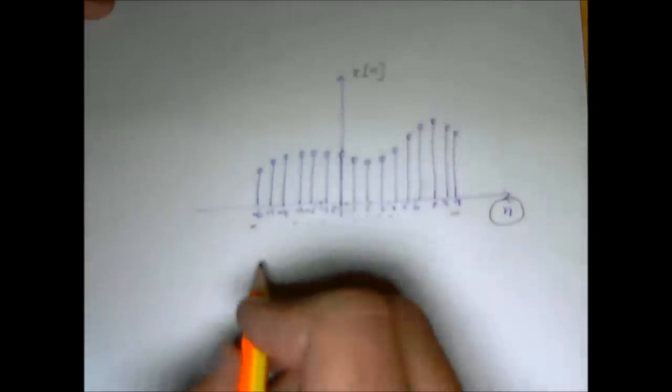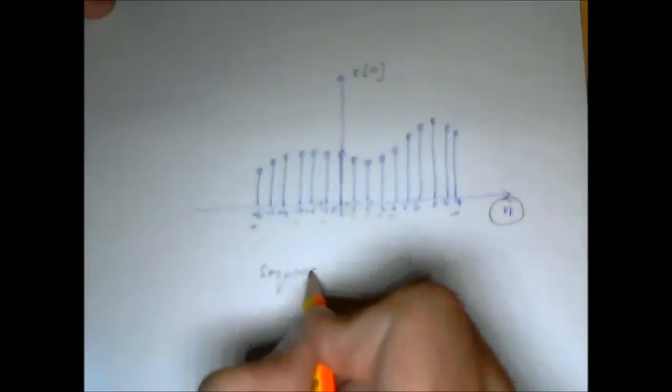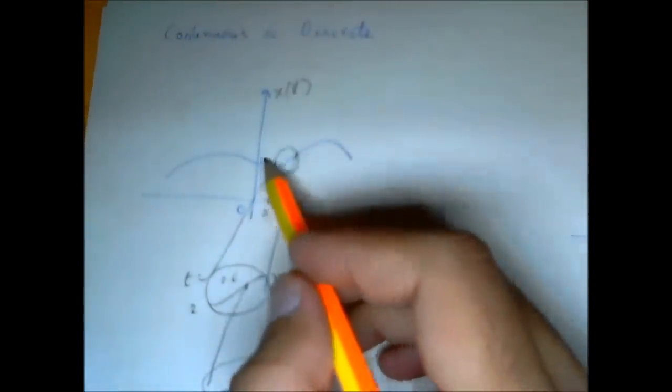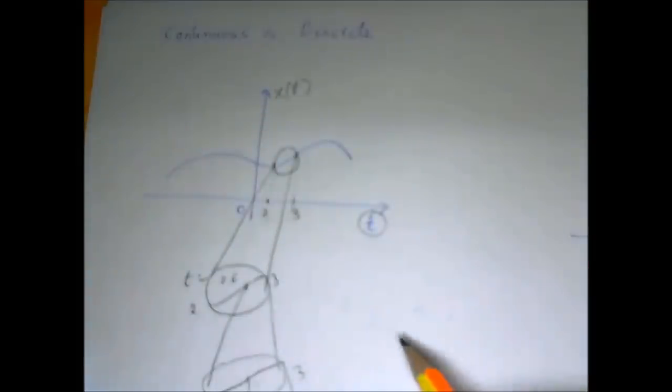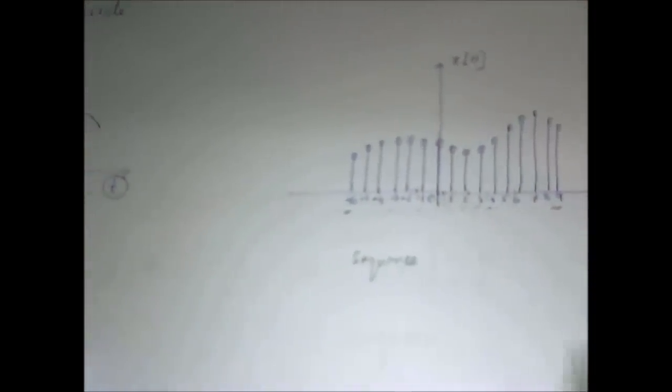A discrete time signal is also called discrete time sequence because this is essentially a sequence of numbers. However, a continuous time signal cannot be a sequence of numbers because you cannot talk about every number between every point. There are infinite such numbers. So you need something like an equation.